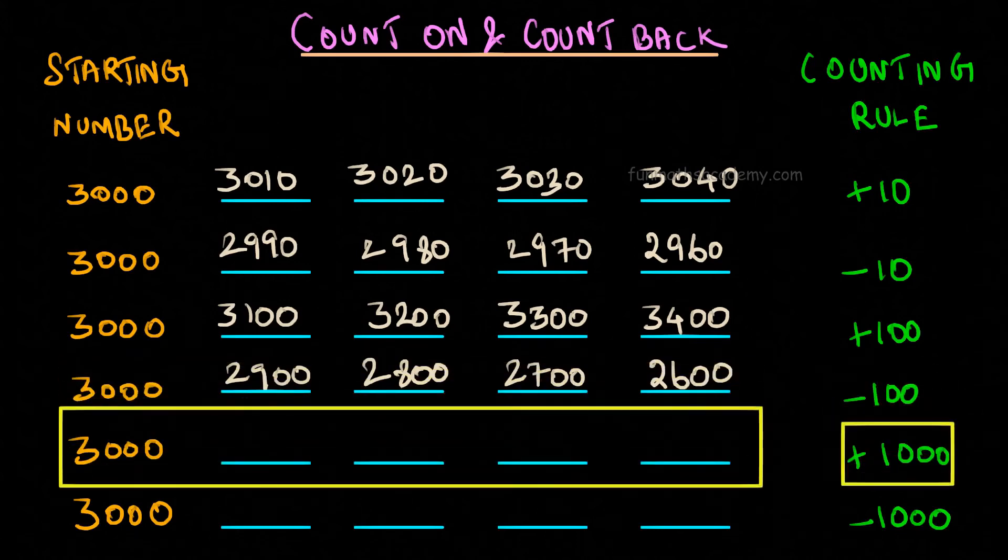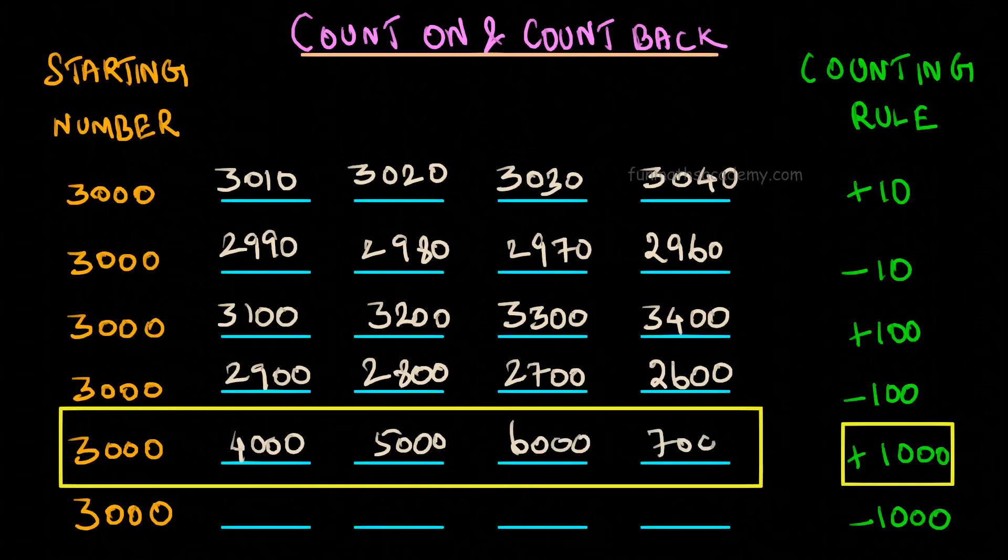When counting rule is plus 1000, we will get 4000, 5000, 6000, 7000.